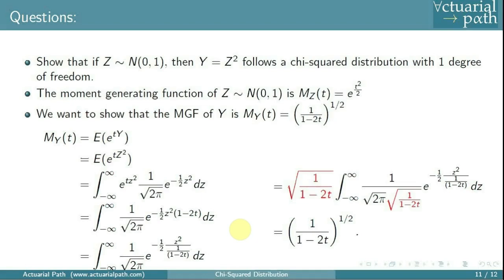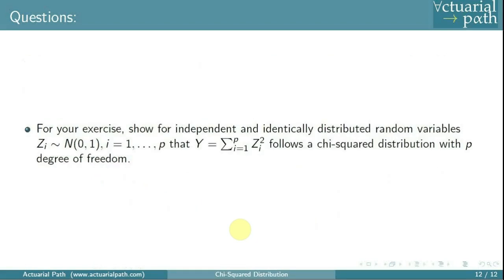For your exercise, show that if we have p independent and identically distributed standard normal variables z1, z2, all the way up to zp, then y, which equals the sum of zi-squared, follows the chi-squared distribution with p degrees of freedom.